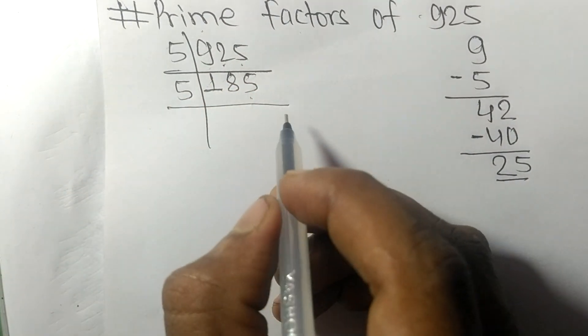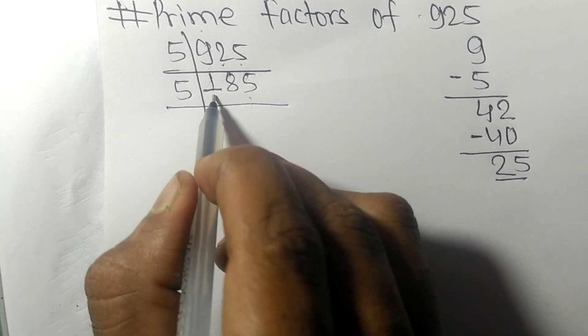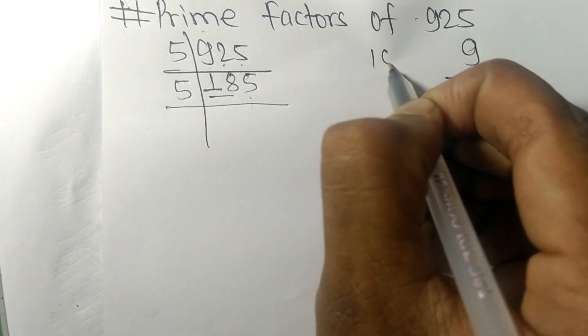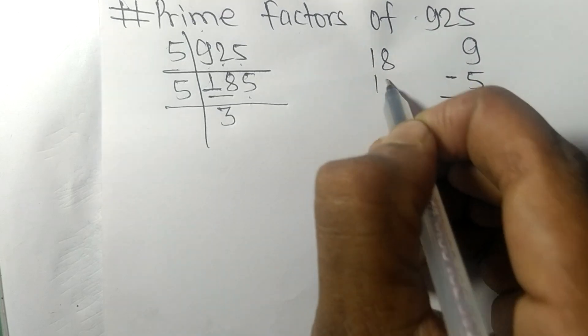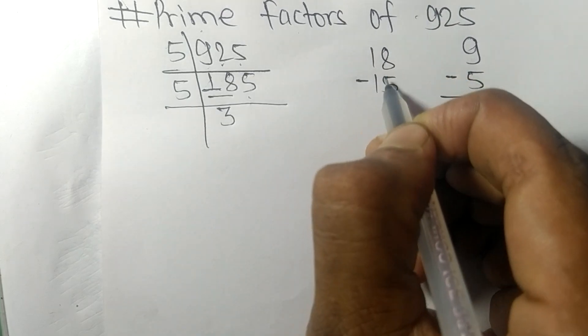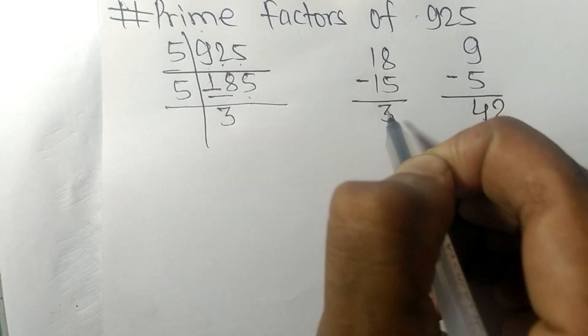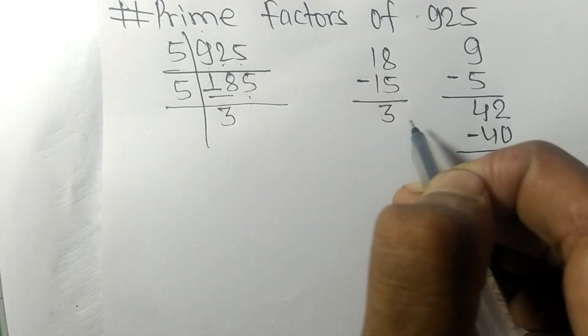Now we have 185. First 18, so 5 times 3 equals 15. On subtracting we get 3. Bring down the 5 to get 35.